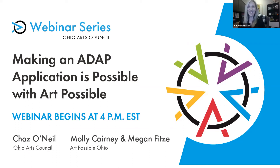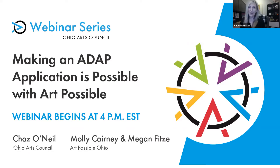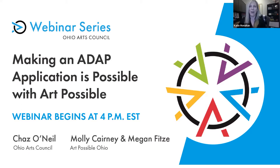All right. Hi everyone. Thank you so much for joining us today. My name is Katie Monahan and I'm a communications strategist here at the Ohio Arts Council. I am a white woman in my late 30s with shoulder length blonde hair and I'm wearing a black button-down shirt. My background is my office space here at the Ohio Arts Council. I am really pleased to welcome you to today's webinar.